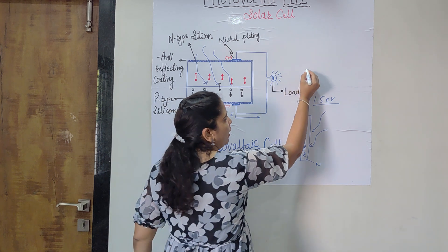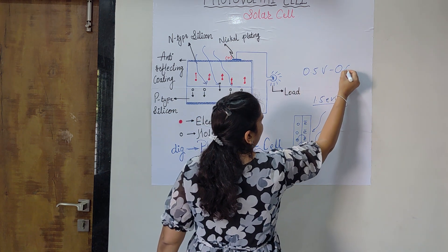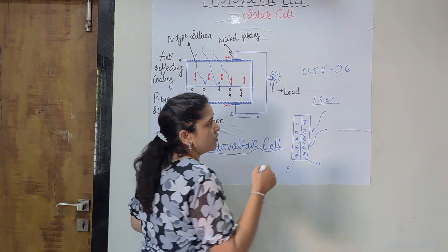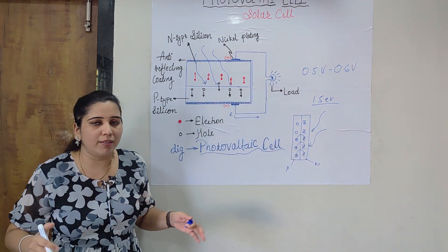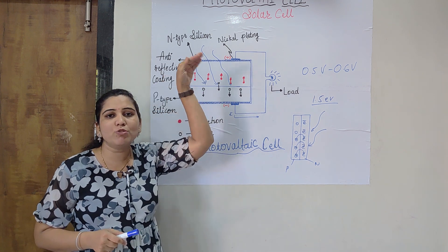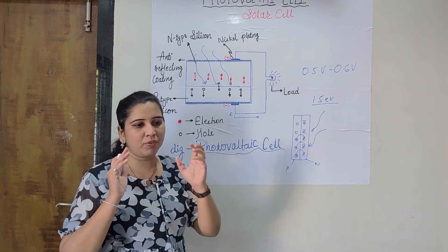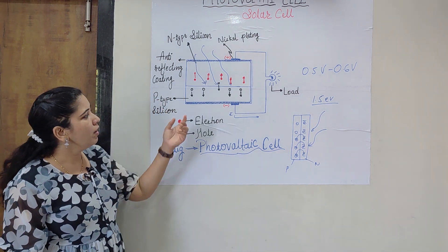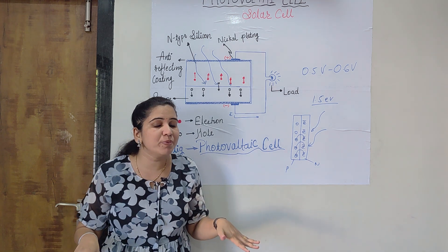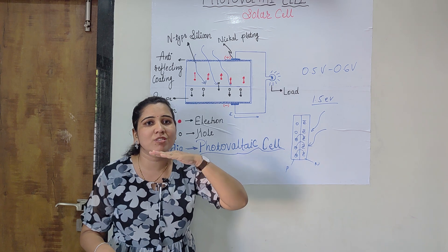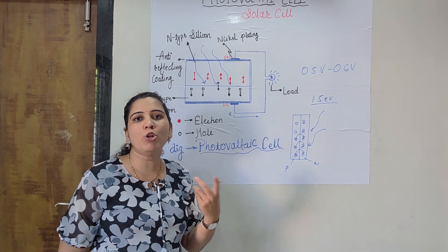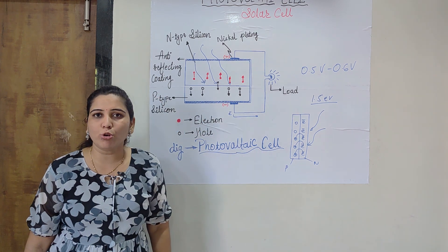A single cell can produce 0.5 to 0.6 volts, which is not very high. That is why a single cell is not directly useful; instead, a number of cells are connected together as a panel or module. This way, a large number of electrons are produced and a higher amount of energy is generated. The anti-reflecting coating is essentially a glass coating that protects the silicon wafer material from environmental elements like wind and other factors.